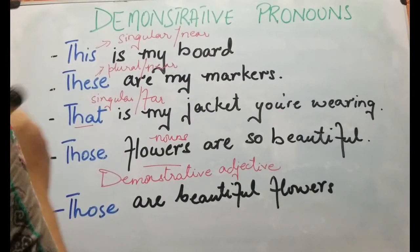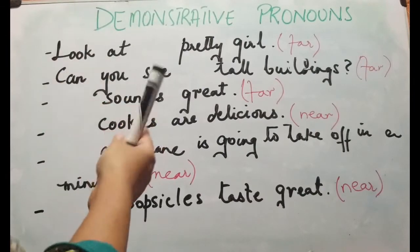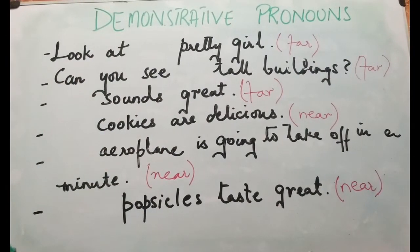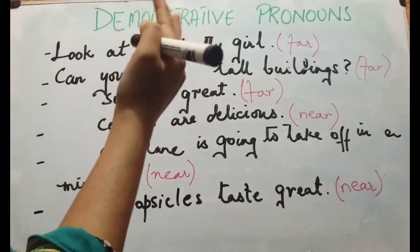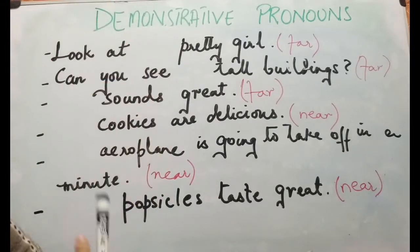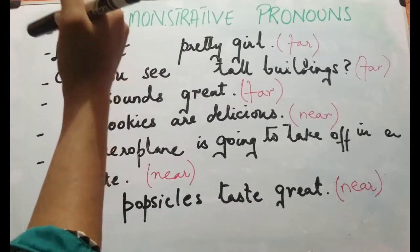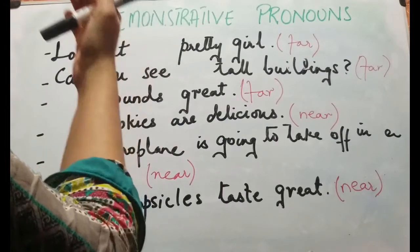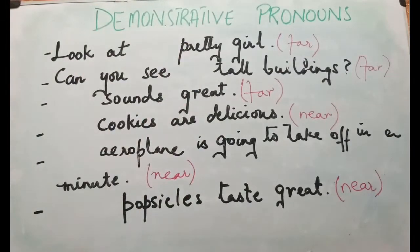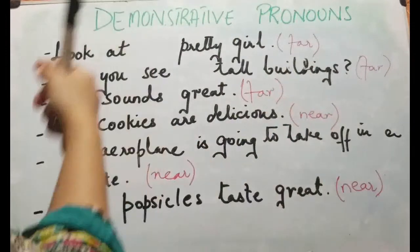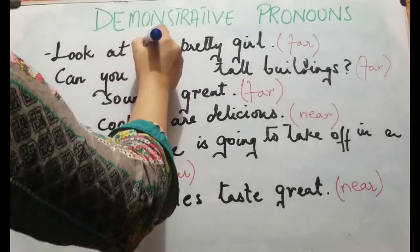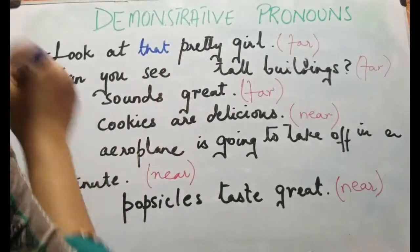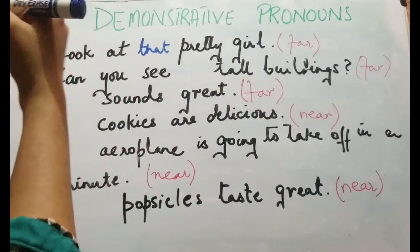Let's look at some more examples. Now you are going to fill in the blanks. The very first one: 'Look at dash pretty girl' — the pretty girl is standing far away. What are you going to use? Obviously 'that.' 'Look at that pretty girl' — she's standing far away at a distance, so you place 'that' over here.